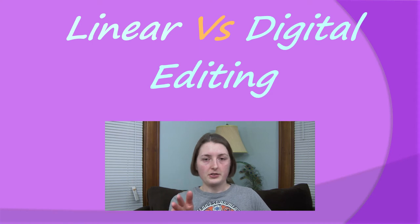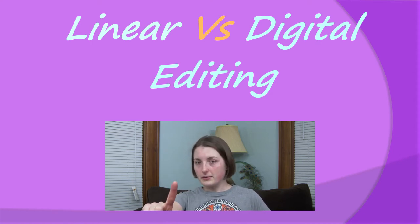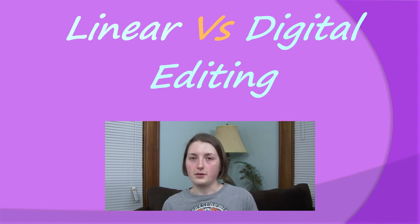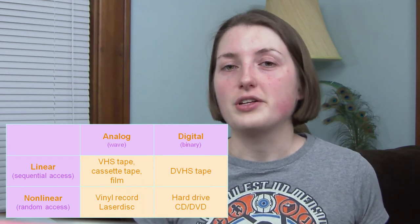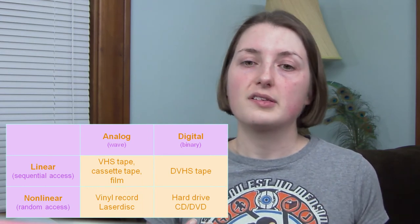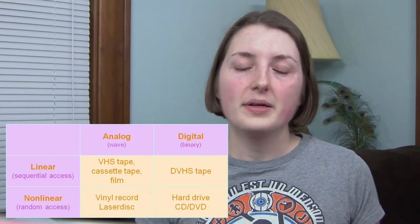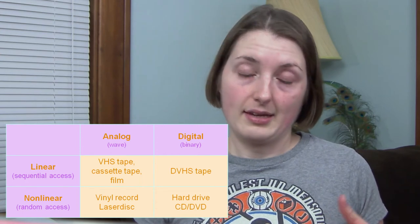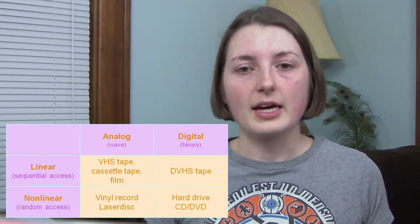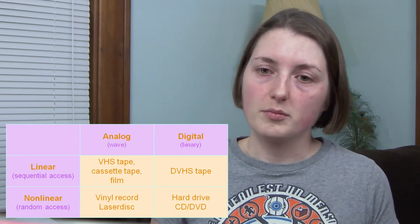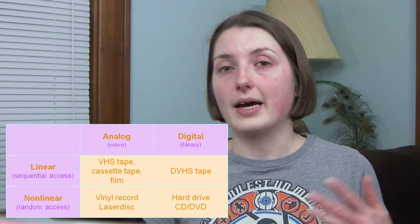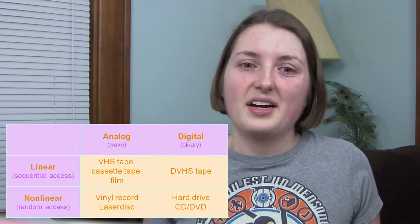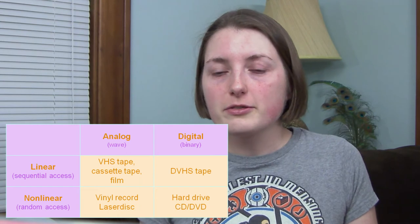I'd like to talk about the history of AMVs, but before I do, I think it would help to explain the difference between linear and digital editing first. Video and audio sources like anime or songs can be stored on linear or non-linear mediums. With a linear medium, you can only access the data linearly — sequentially. So if there's a particular scene from a show you want to watch and the episode is on a linear medium, you have to fast forward or rewind past the other data to get to the part you want. You can't just skip ahead.